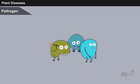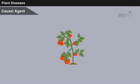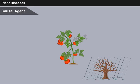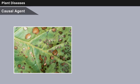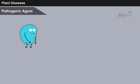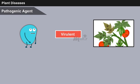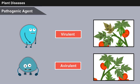A pathogen is an organism capable of causing disease in a particular host or range of hosts. A causal agent is a general term used to describe a biotic or abiotic factor which incites and governs disease and injury. A causal organism is a pathogen of biotic origin. When a pathogenic agent is virulent, it has the capacity to cause disease; if avirulent, it is a variant that does not cause a severe disease.